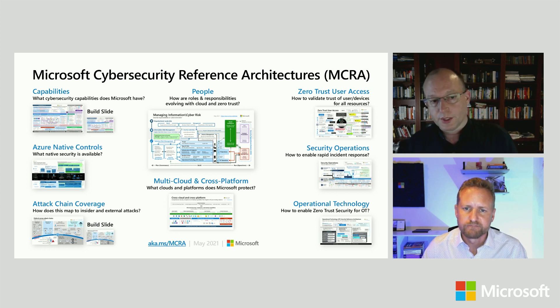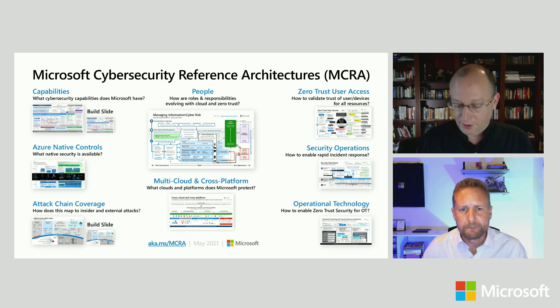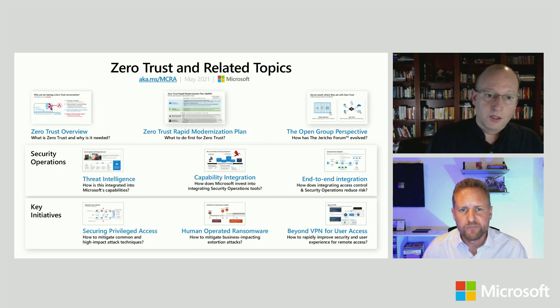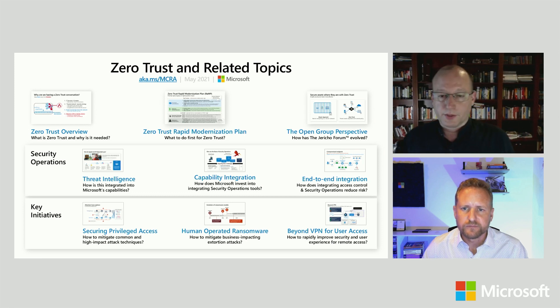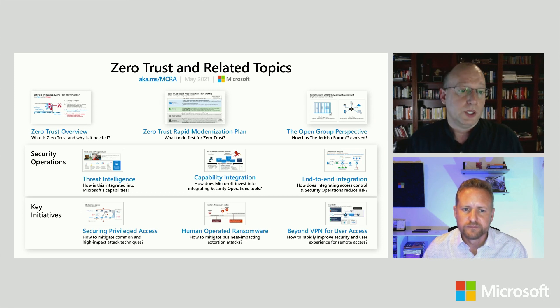We really do want to solve the problems that our customers are facing — that's the number one thing here. The second page is supporting content that people found very valuable: an overview of Zero Trust, a good five, six, or seven slides that walk through why we do Zero Trust, what it is, and then what we recommend first, next, and later. That's where the rapid modernization plan — or RAMP — kicks in.